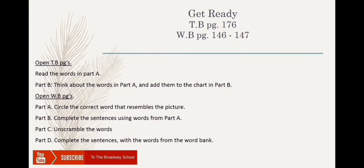Now open your workbook pages. In Part A, circle the word that tells us what the picture is about — the first one has been done for you. In Part B, fill in the blanks using words from Part A. In Part C, the words are scrambled — pictures give you hints, so unscramble the words and write them in the space provided. Lastly, in Part D, complete the sentences with the words from the word bank.